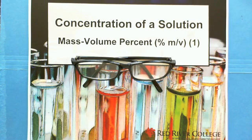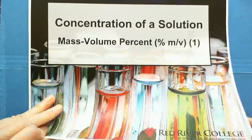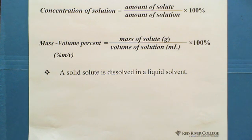Hello, welcome to Wise Guys. This session is talking about concentration of solution — mass volume percent. By definition of concentration, we have concentration of solution equals amount of solute divided by amount of solution times 100%. In mass volume percent, the numerator is the mass of solute expressed in grams, and the denominator is the volume of solution in milliliters.